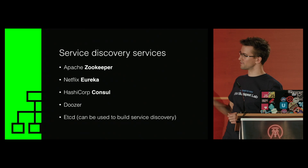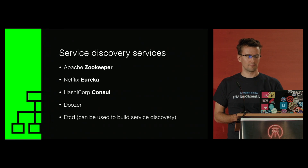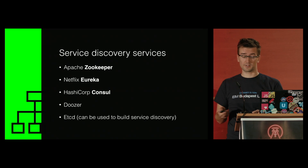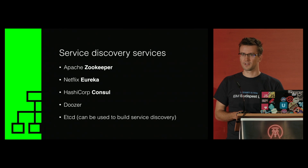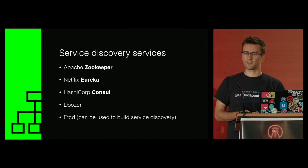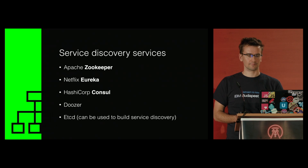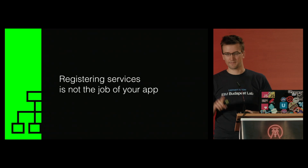Some great service discovery solutions are Zookeeper from Apache, Eureka from Netflix, Consul from HashiCorp, and Doozerd or etcd, which can be used to build a service discovery system. I've used Consul so far — I used it to update load balancer configurations when a new instance of my Node service was created, and it reloaded the load balancer to actively start directing traffic to them. Registering services is not the job of your app — I can't emphasize this enough.